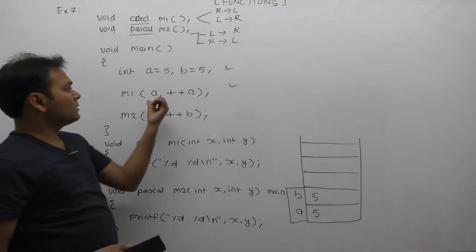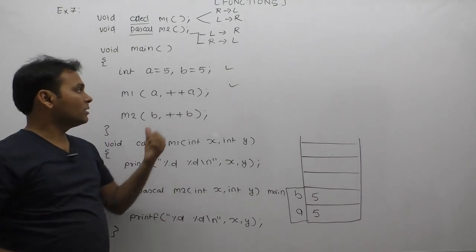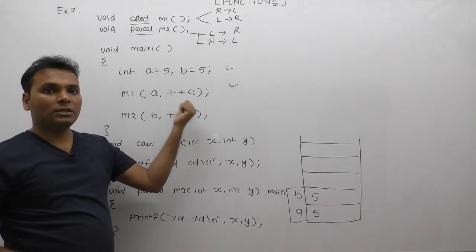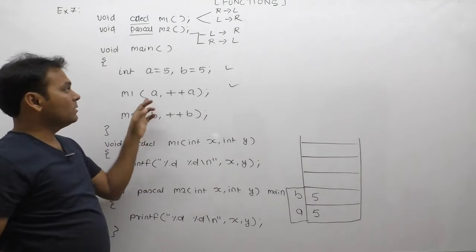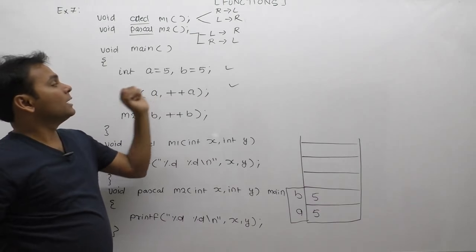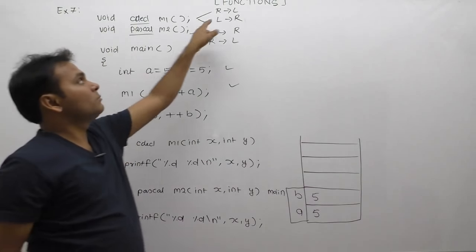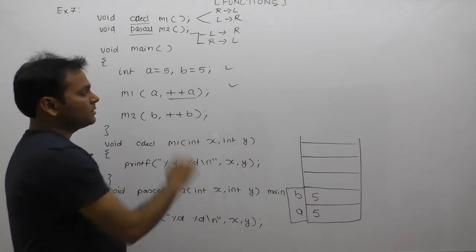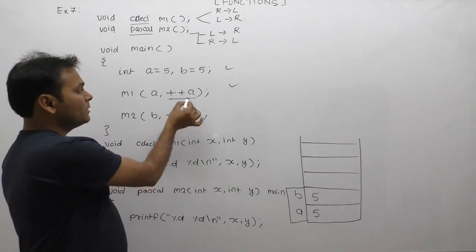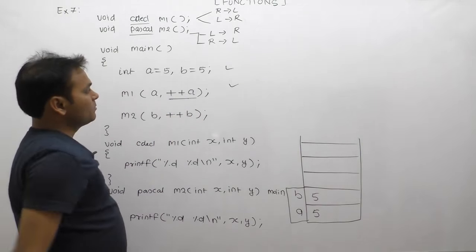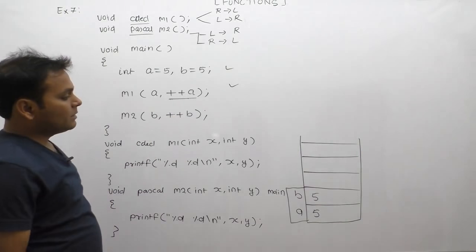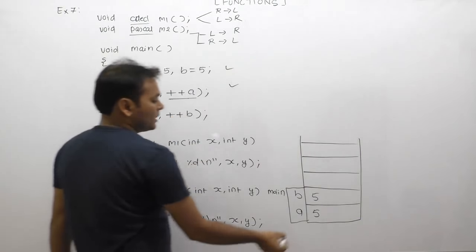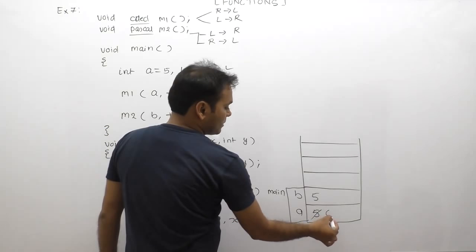For m1, we allocate space and replace with corresponding argument values. When resolving arguments, we are going to increase the value to 6.